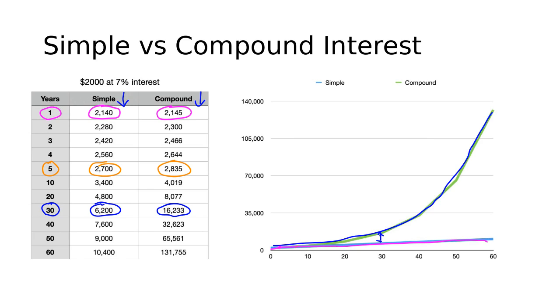Looking at these numbers and seeing what compound interest can do, it's kind of easy to see how Einstein is given credit for saying that compound interest is the most powerful force in the universe.